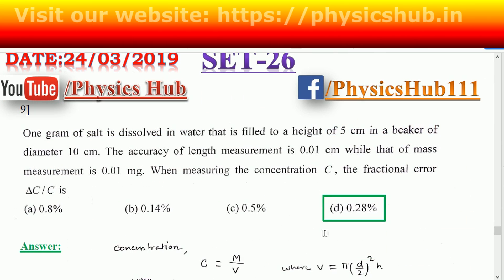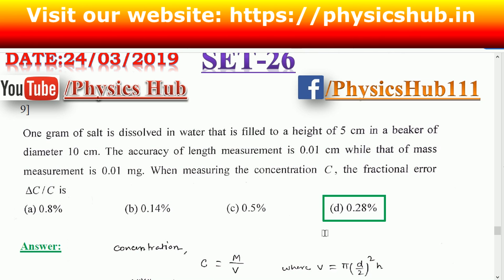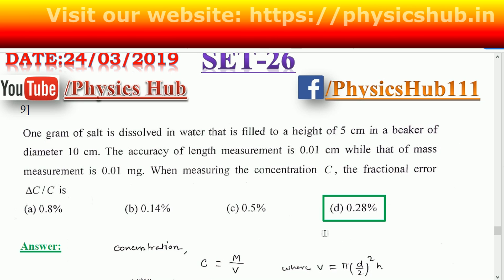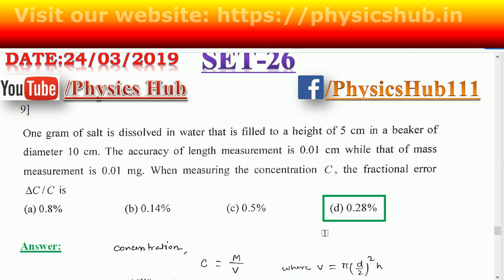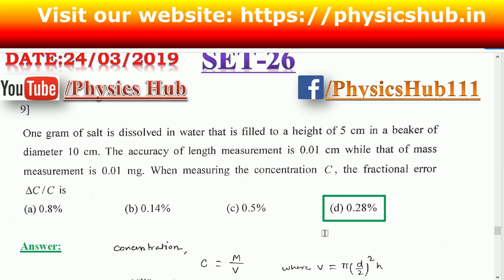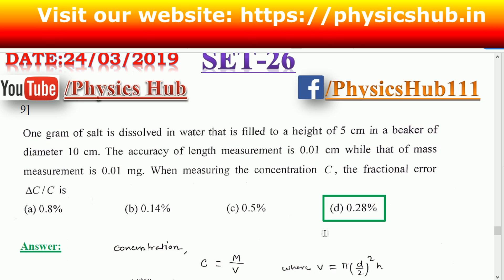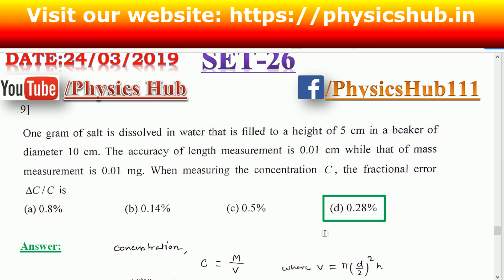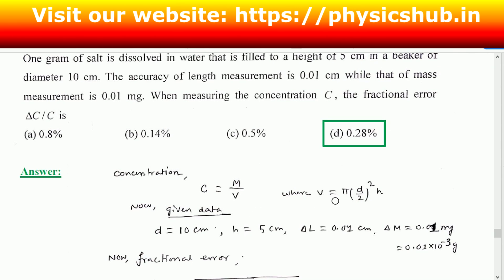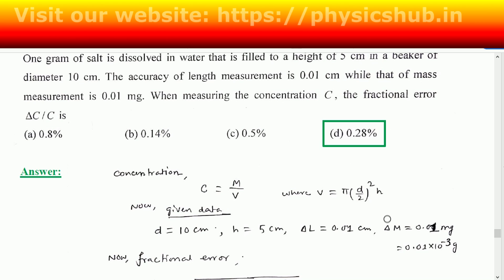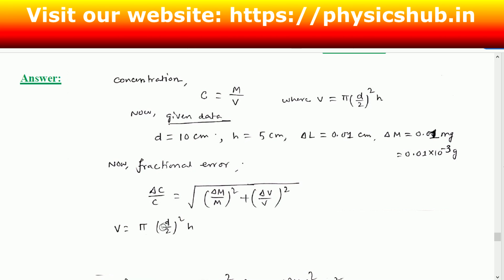Question number nine: one gram of salt is dissolved in water filled to a height of 5 centimeter in a beaker of diameter 10 centimeter. The accuracy of length measurement is 0.01 centimeter while that of mass measurement is 0.01 milligram. When measuring the concentration C, what is the fractional error delta C by C? We know C equals mass divided by volume, and volume is given by pi times (D/2) squared times h.